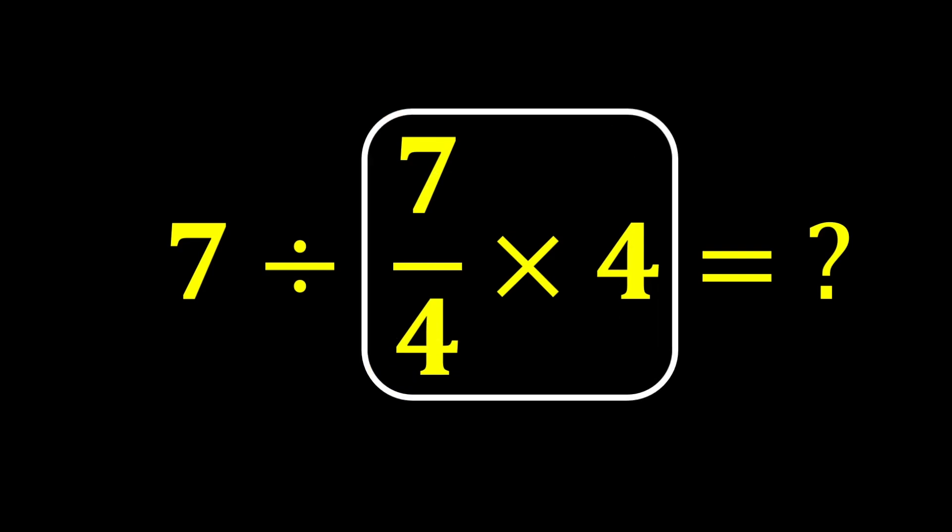First, we perform this multiplication, 7 over 4 times 4. We can easily cancel this 4 and this 4, leaving only 7.